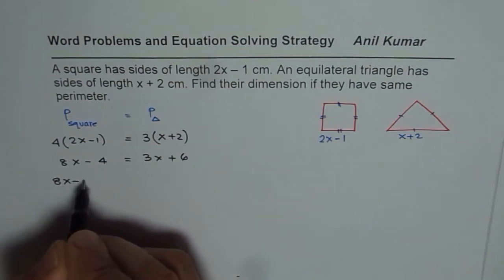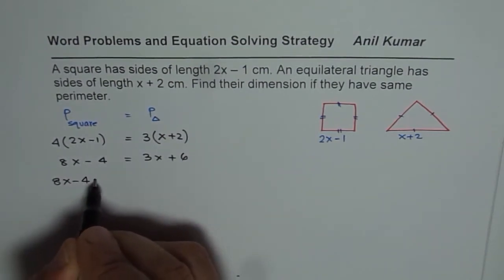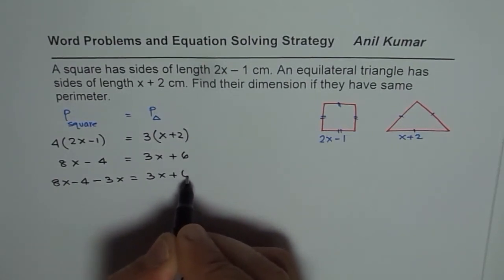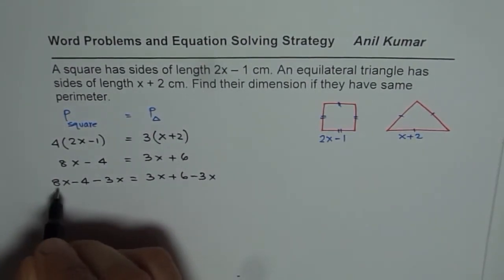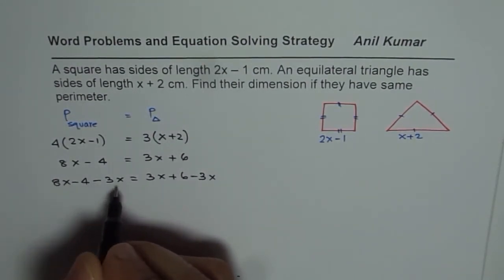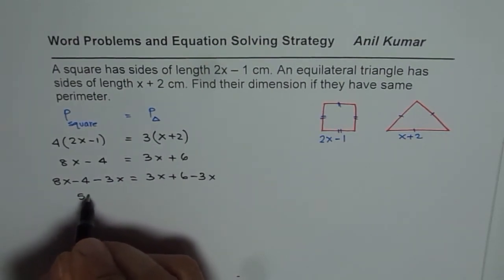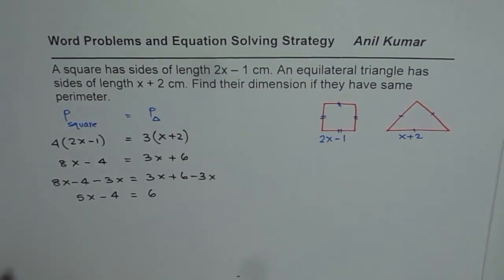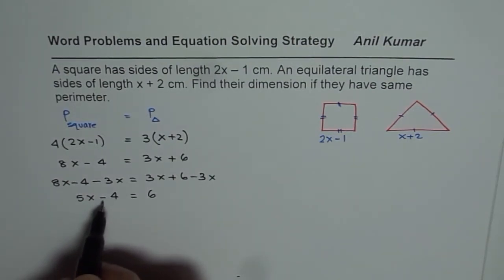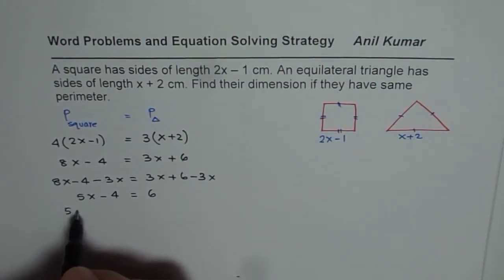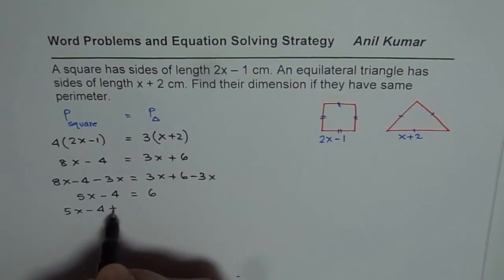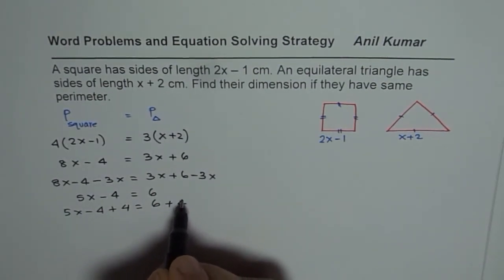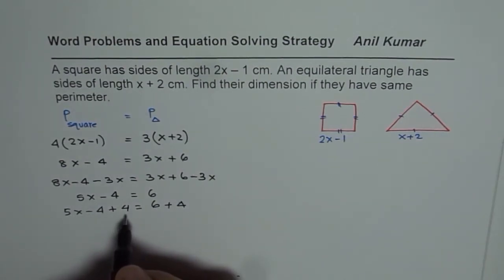To group variables, let us take away 3x from both the sides first. So we will do one by one, minus 3x. So that gives us 8x minus 3x is 5x. So we have 5x-4 equals 6. Now we can add 4 on both sides, so we have 5x-4+4 equals 6+4. Minus 4 plus 4 is 0, so we are left with 5x equals 10.